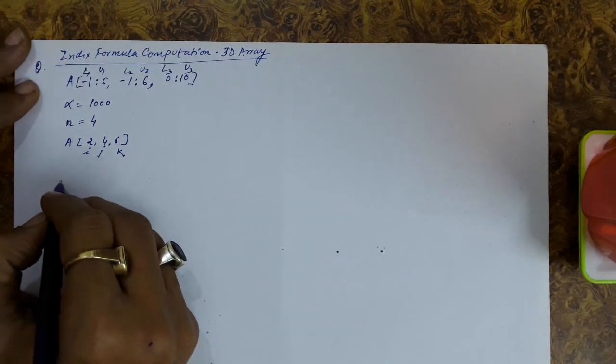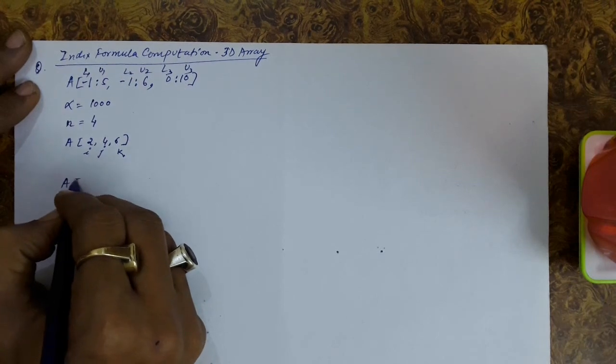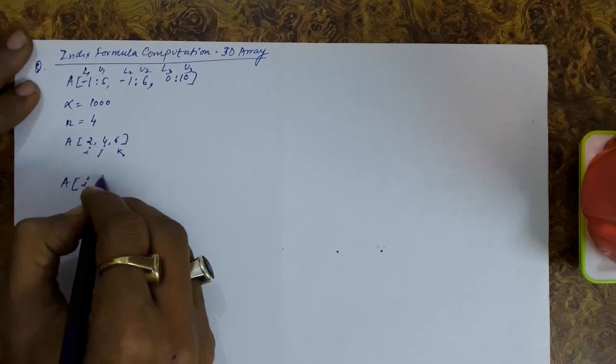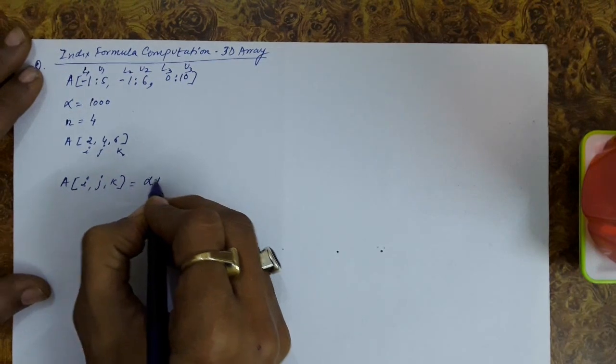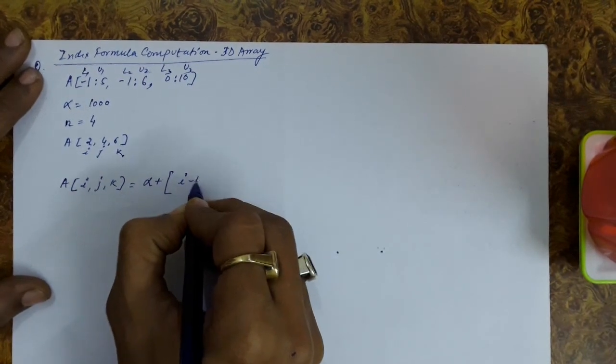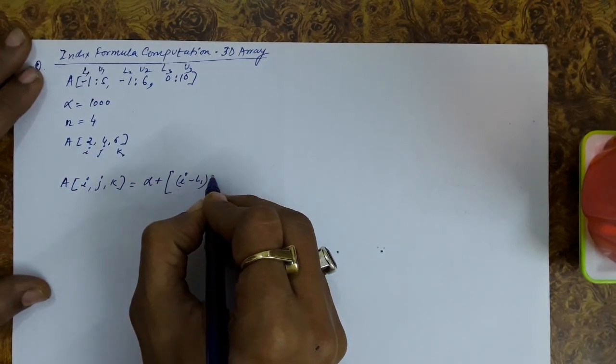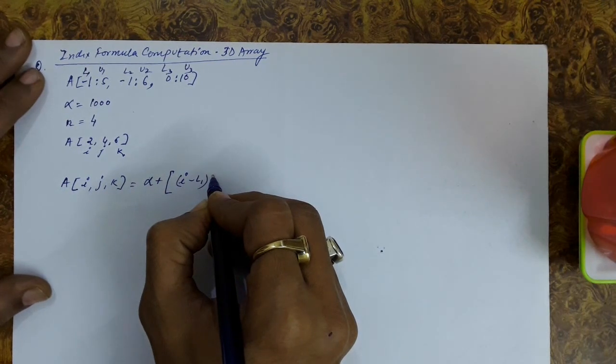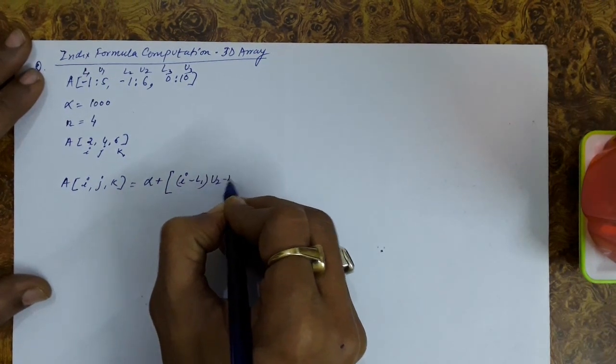Let us put all these values in the formula directly. So we are finding out the address of A(i,j,k) which is equal to alpha plus (i minus lower bound 1) multiplied with (u2 minus l2 plus 1) times (u3 minus l3 plus 1).